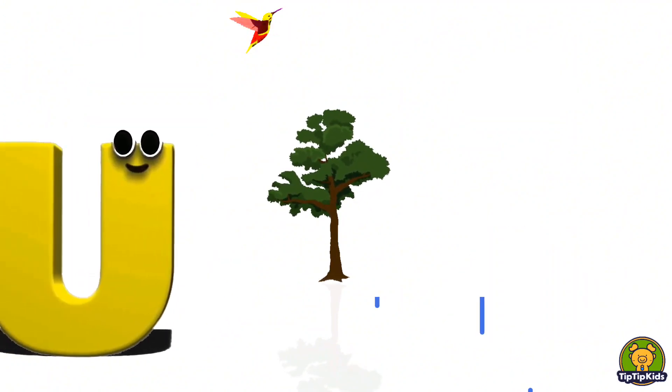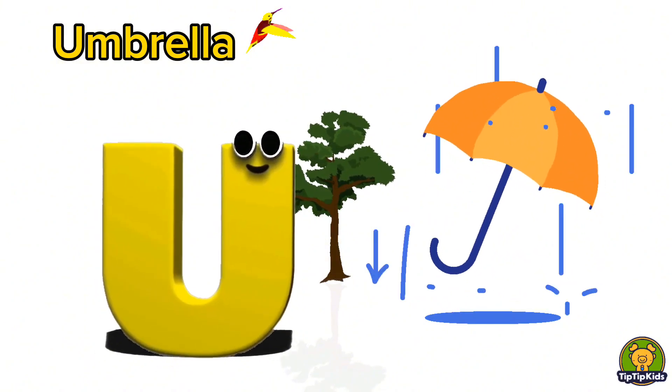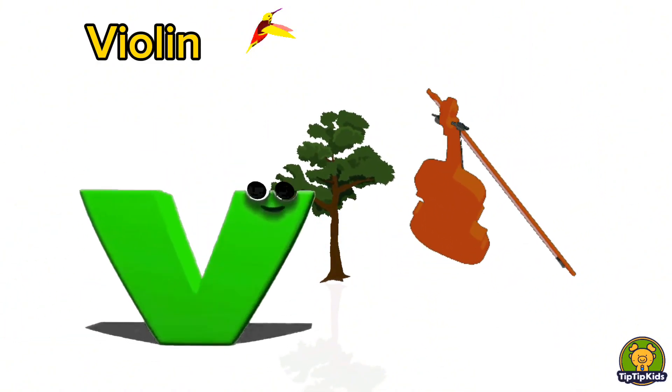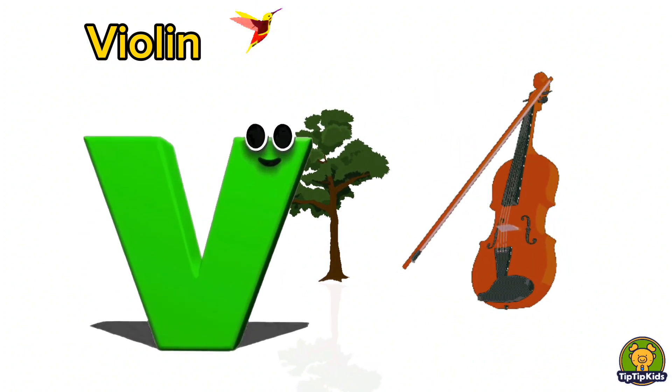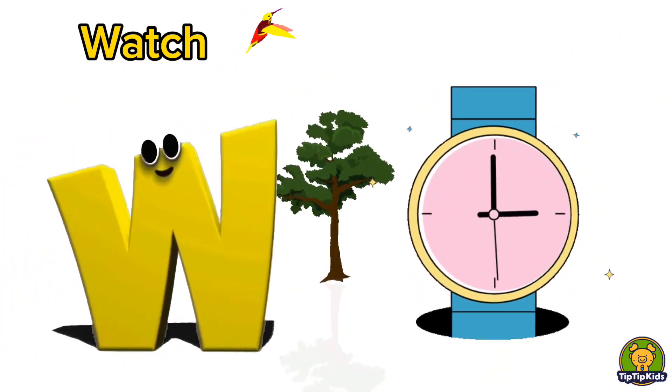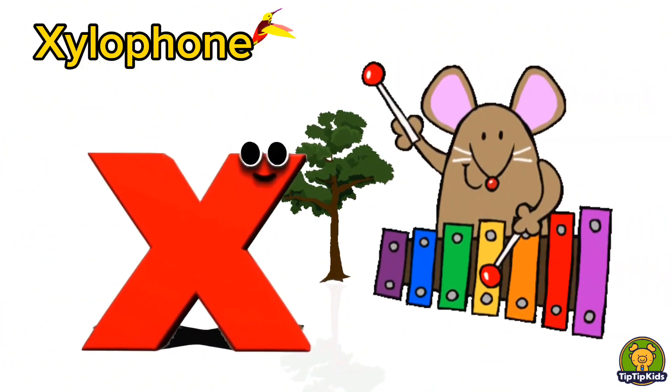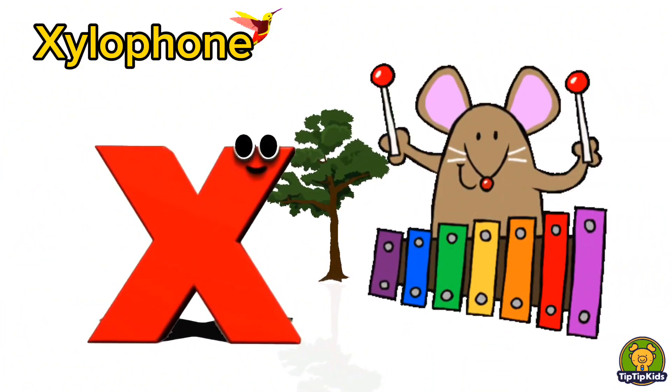U is for Umbrella, U-U-Umbrella. V is for Violin, V-V-Violin. W is for Watch, W-W-Watch. X is for Xylophone, X-X-Xylophone.